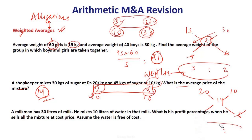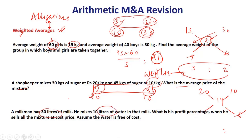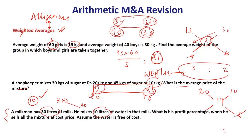A milkman has 30 liters of milk and mixes 10 liters of water. What is his profit percentage when he sells at cost price, assuming water is free? Let the price of 30 liters be 300 rupees, so 10 rupees per liter. After adding 10 liters of water, you have 40 liters at 300 rupees total — so 7.5 rupees per liter. Selling at 10 rupees, the profit is 2.5 rupees on a base of 7.5, which is one-third or 33.33 percent profit.